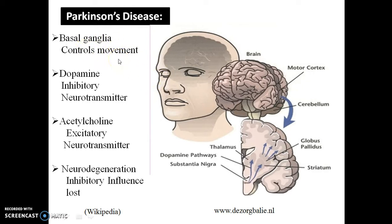In our brain, dopamine is released by three pathways: the nigrostriatal pathway, the mesolimbic-mesocortical pathway, and the tubero-hypophyseal pathway. In the nigrostriatal pathway, dopamine is released from the substantia nigra to the corpus striatum. This corpus striatum includes the globus pallidus, caudate, and putamen.